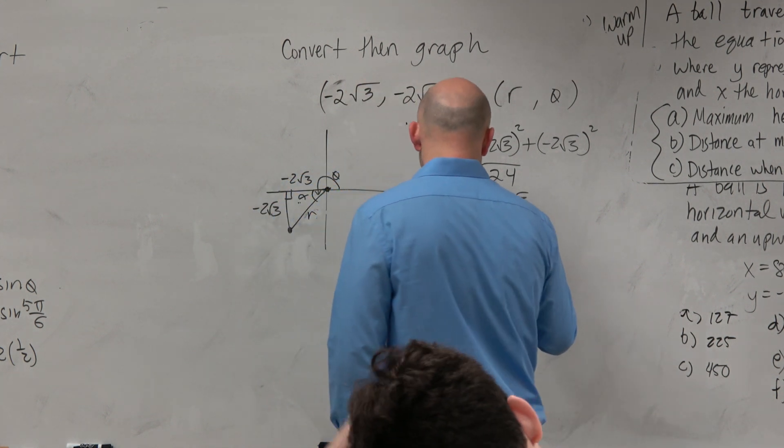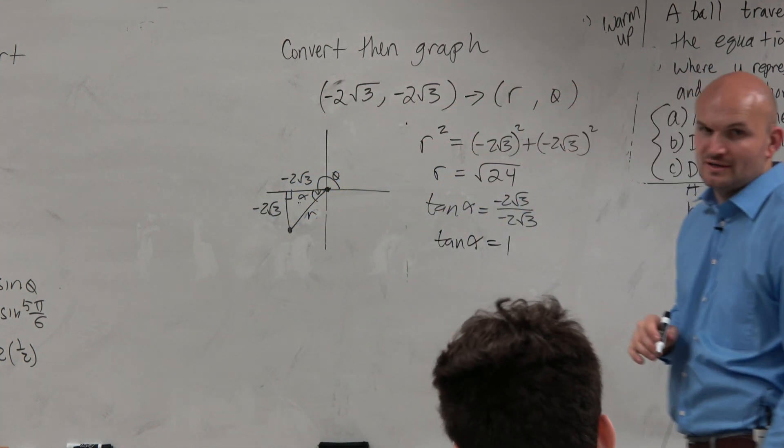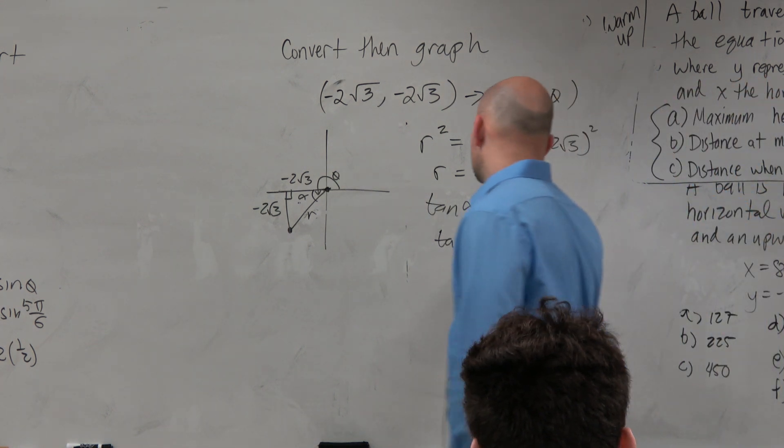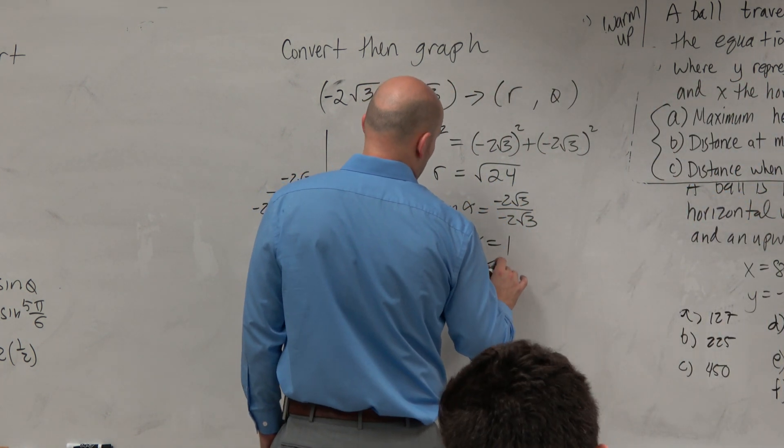Square root of 1 is 1. No, tangent of alpha is equal to 1. So what is alpha? It's a 45 degree angle, or in radians would be pi over 4.